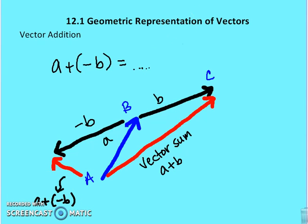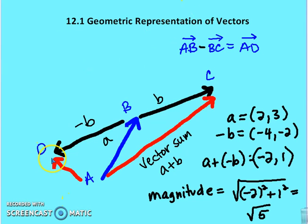So I can rewrite this as A plus minus B. And I end up with what I'll say is AD as my new vector sum. So AB plus or minus BC is equal to AD. And if I were to subtract, I say A plus or minus B, which is now negative 4, negative 2. Adding these together individually leaves me with negative 2, 1. And then finding the magnitude, negative 2 squared plus 1 squared is equal to the square root of 5.